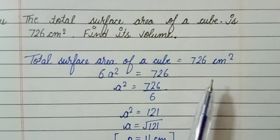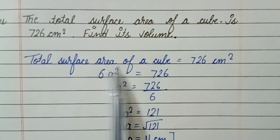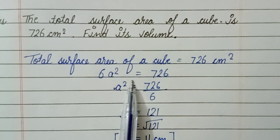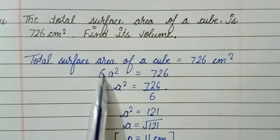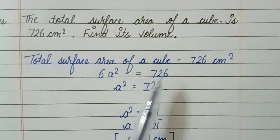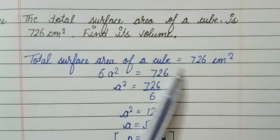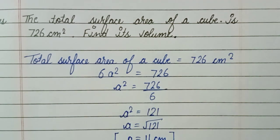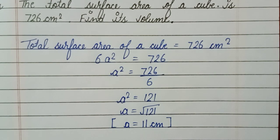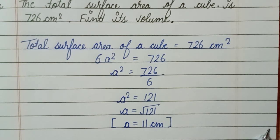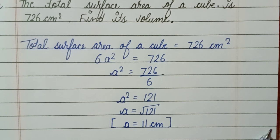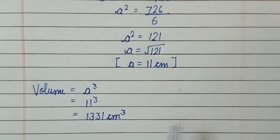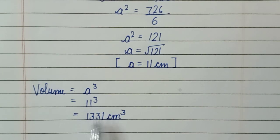To summarize: the total surface area is 726 cm squared, and using the formula total surface area equals 6a squared, we find a equals 11 cm. Using the volume formula — side cubed — we get 11 cubed, which is 1331 cm cube. This is the answer.